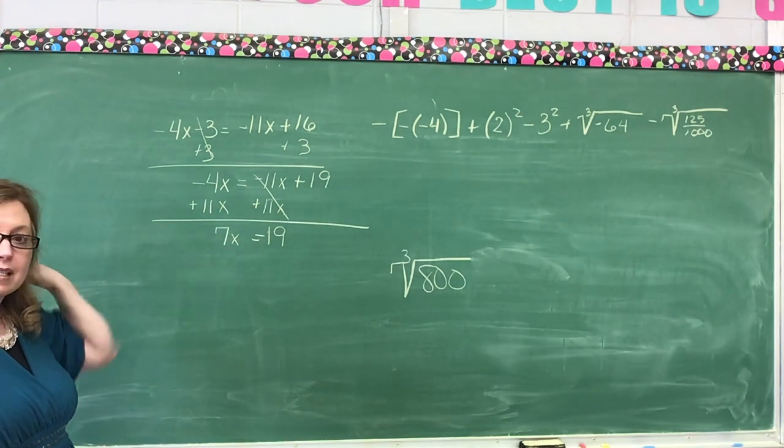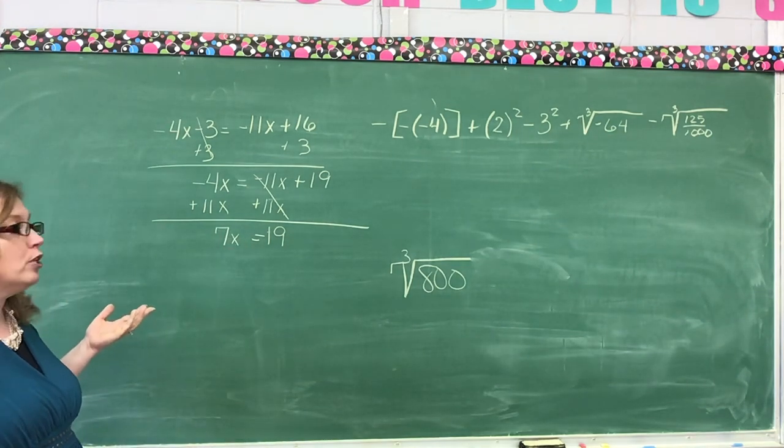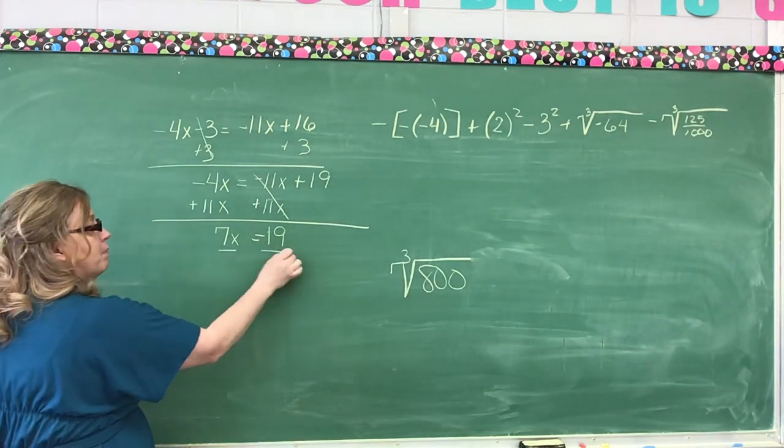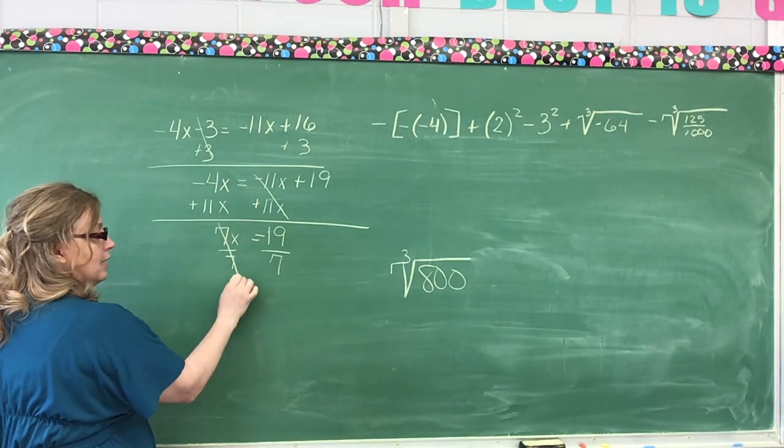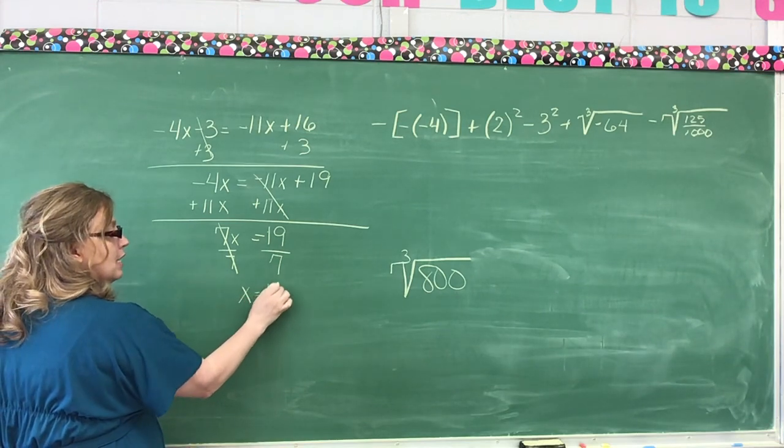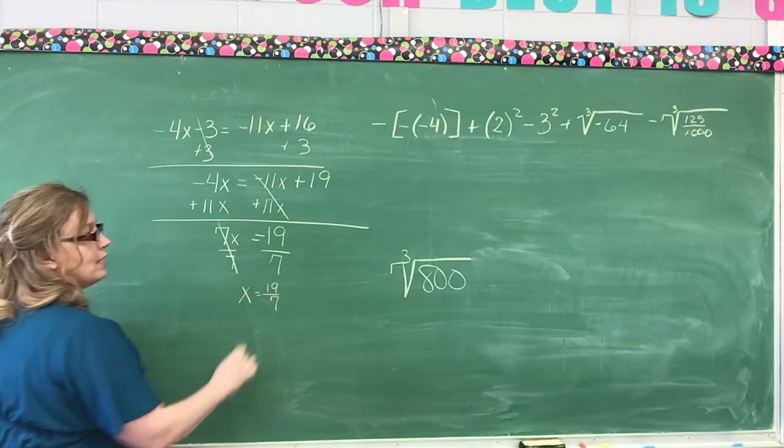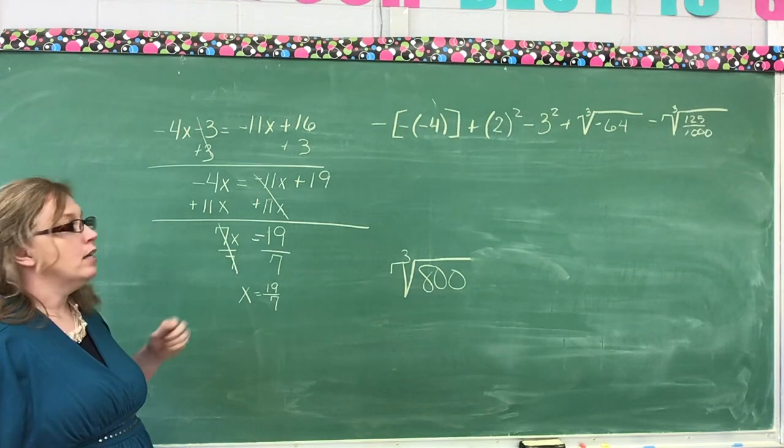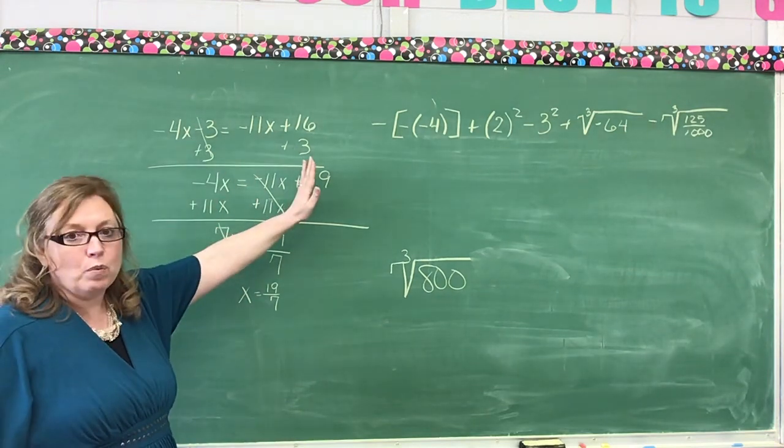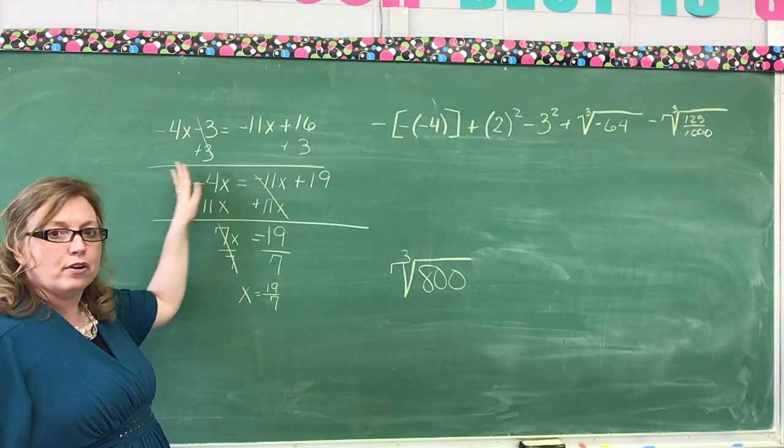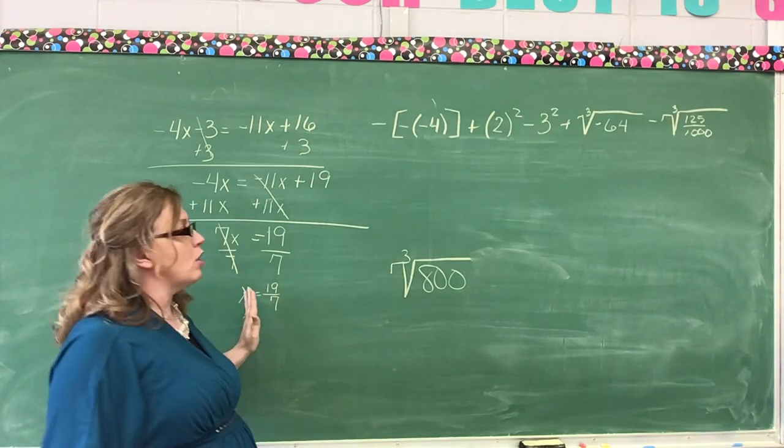Now, what are we going to do next? We're going to divide by 7 because we're still trying to get our x by itself. This is going to cancel, leaving us 19/7. Remember, you're getting the constants on one side, the x's on the other, and working your way down to solve for x.